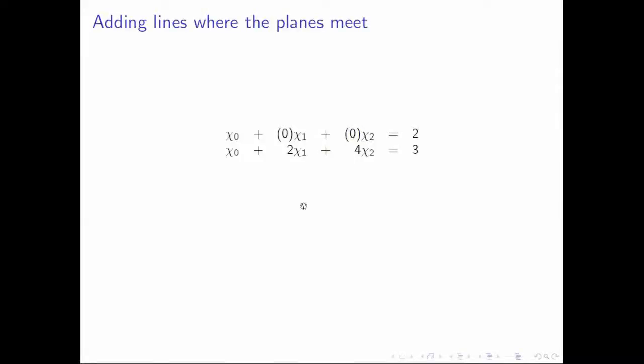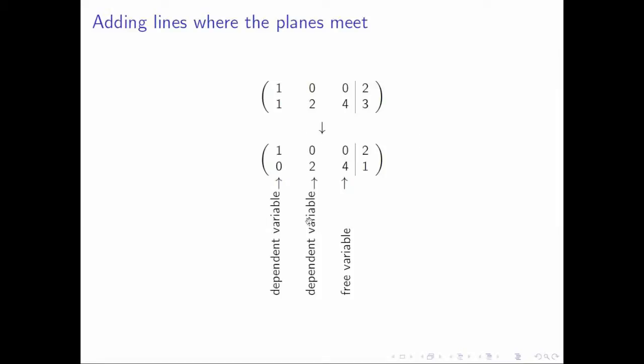You can do exactly the same exercise with the second equation and the third equation. You can set it up as an appended system, transform it into row echelon form, and then identify the free variable and the two dependent variables.